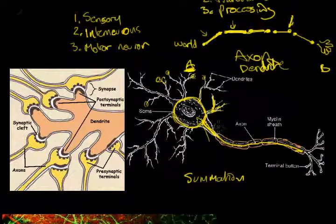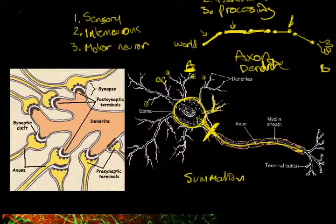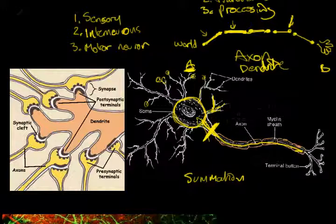And if that reaches a certain threshold at the beginning of the axon - this point is called the axon hillock, which marks the beginning of the axon - and if all of that signal builds up to a certain threshold, then the action potential, which is the electrical impulse of the neuron, is unleashed. It bursts and travels the length of the axon and can then pass the signal on to the next neuron in the sequence or to the next neurons in the sequence.